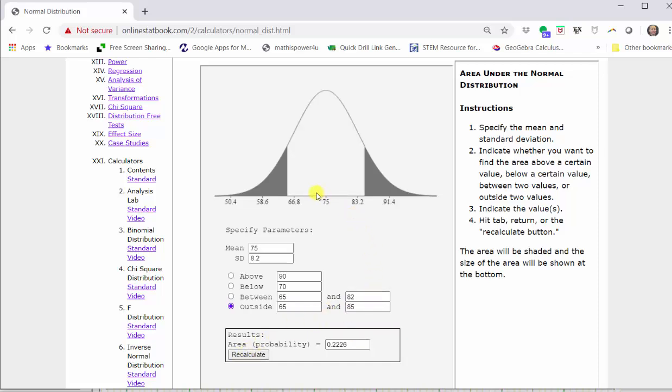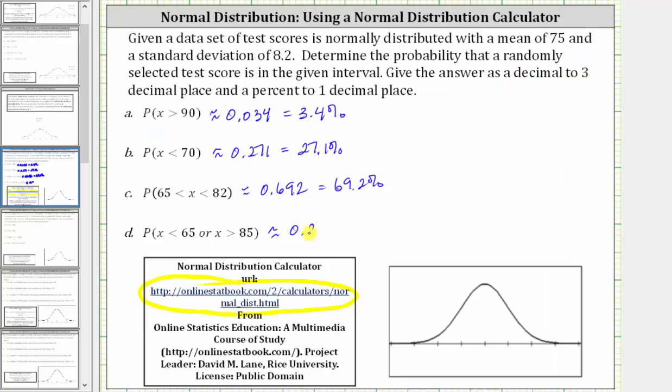Once again, notice how the area below the curve is shaded to the left of 65 and right of 85. This total area represents the probability that X is less than 65 or greater than 85, which to three decimal places shown below is approximately 0.223, which is equal to 22.3%.